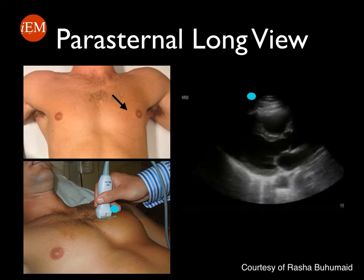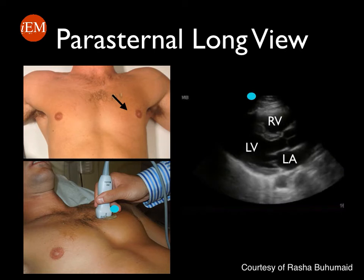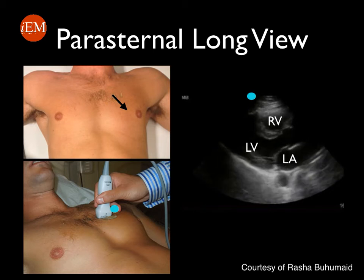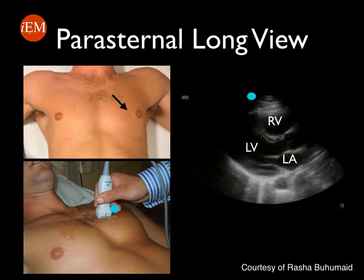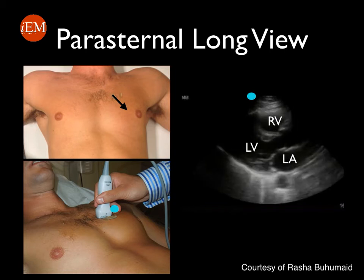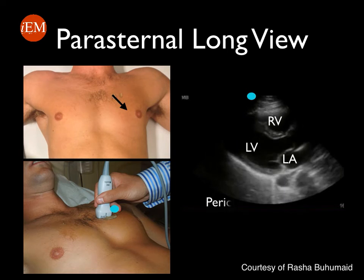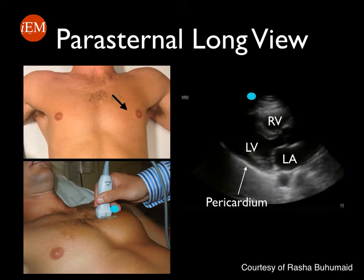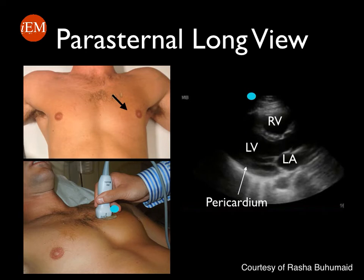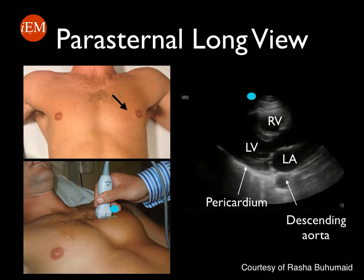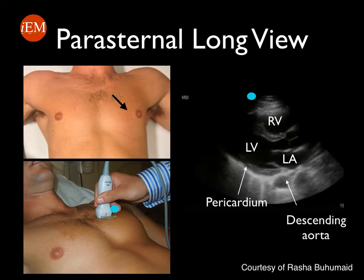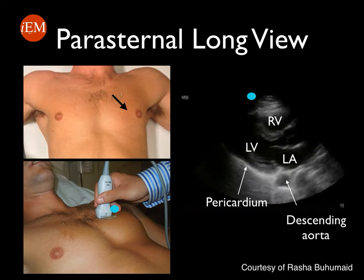Note that the first chamber close to the ultrasound probe is the right ventricle, then there is the interventricular septum, the left ventricle, and the left atrium. The valve between the left ventricle and left atrium is the mitral valve. The white bright stripe surrounding the heart is the pericardium, and there is a circle corresponding to the descending aorta. These are very important landmarks you should be able to identify in a normal parasternal long view.